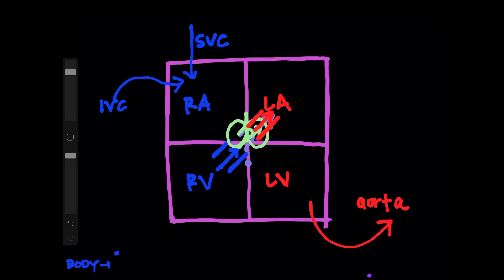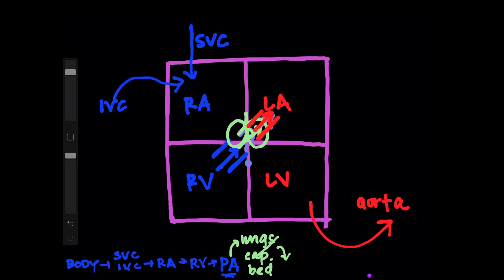In summary, the blood is in your body, deoxygenated, and it dumps into the SVC and the IVC, which then dump into the right atrium and then the right ventricle. From there, it goes through the pulmonary artery, into the lungs and through the capillary beds where it gets oxygenated. It comes back out through the pulmonary veins, which dump into the left atrium, then the left ventricle, and out through the aorta back to your body with oxygenated blood.